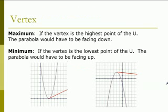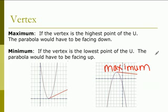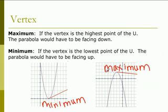The vertex can be either called a maximum vertex or a minimum vertex. The maximum vertex is the highest point of the U — the parabola would have to be facing down. If the vertex is the lowest point of the U, it's called a minimum. If it's high, it's maxed out — it's the highest you can go, so it's a maximum. A minimum is the lowest point on the graph.